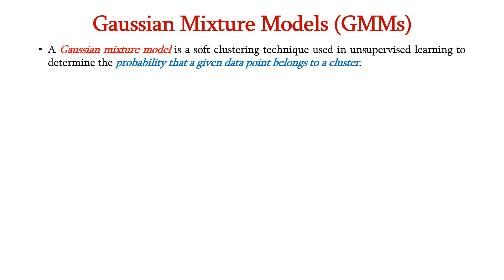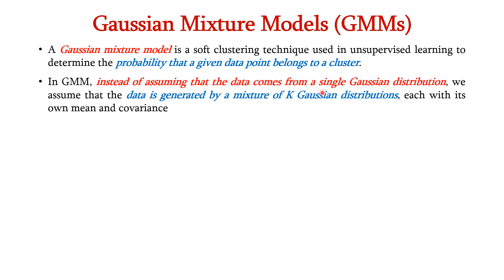A Gaussian mixture model is a soft clustering technique used in unsupervised learning to determine the probability that a given data point belongs to a particular cluster. Here, instead of assuming that the data is coming from a single Gaussian distribution,